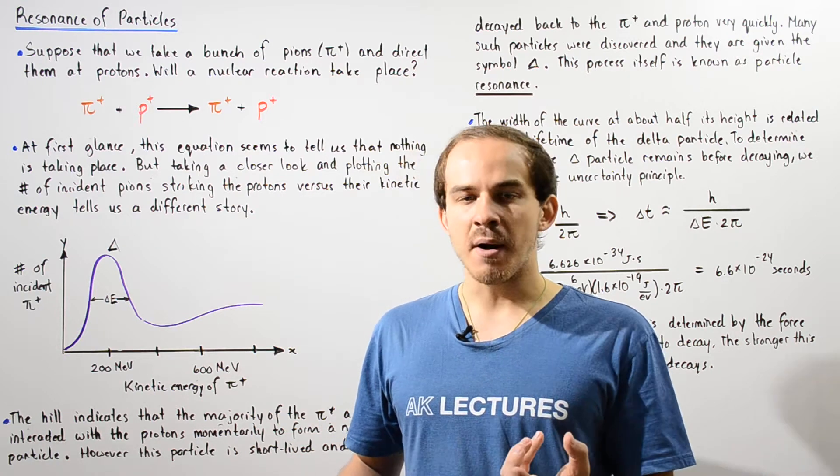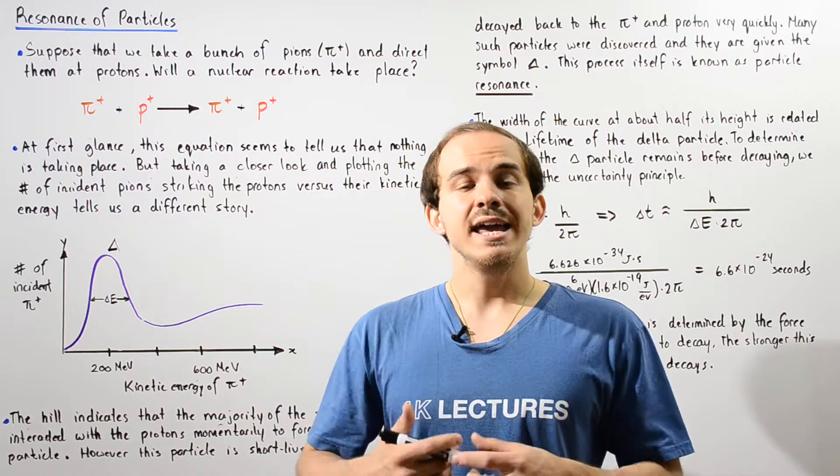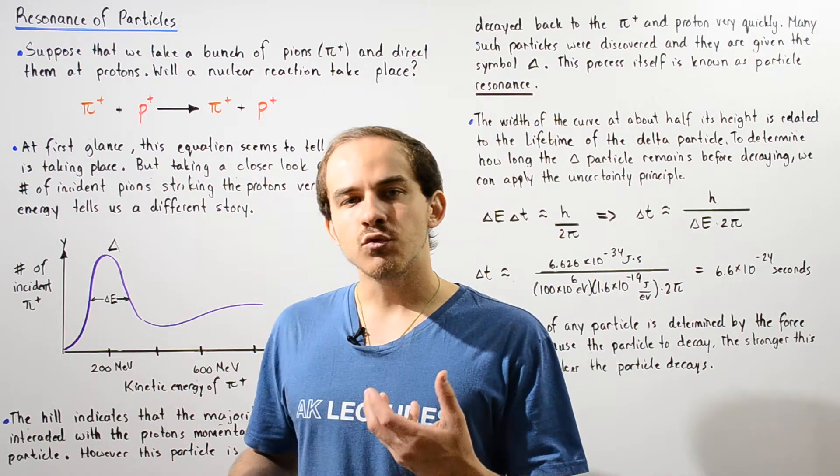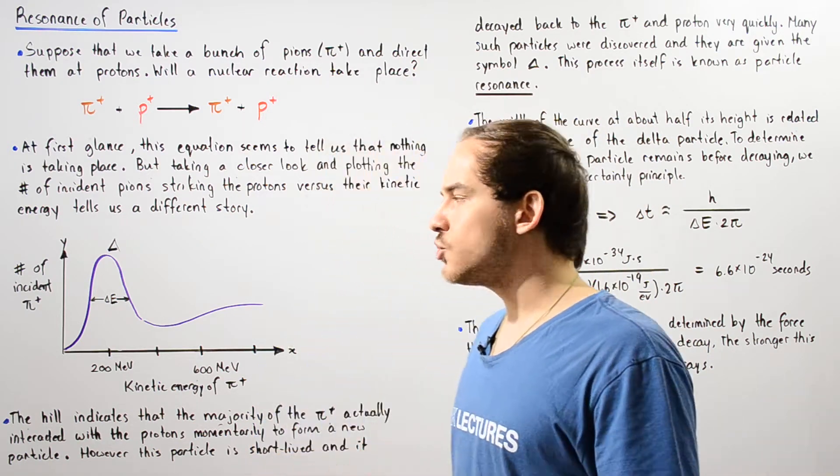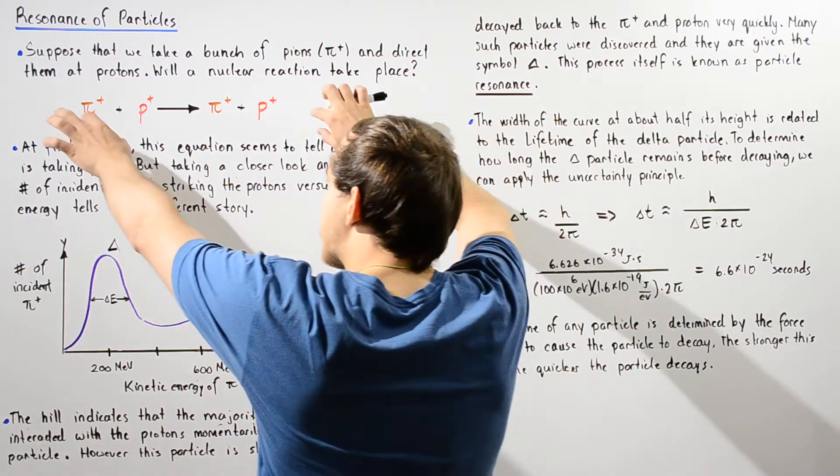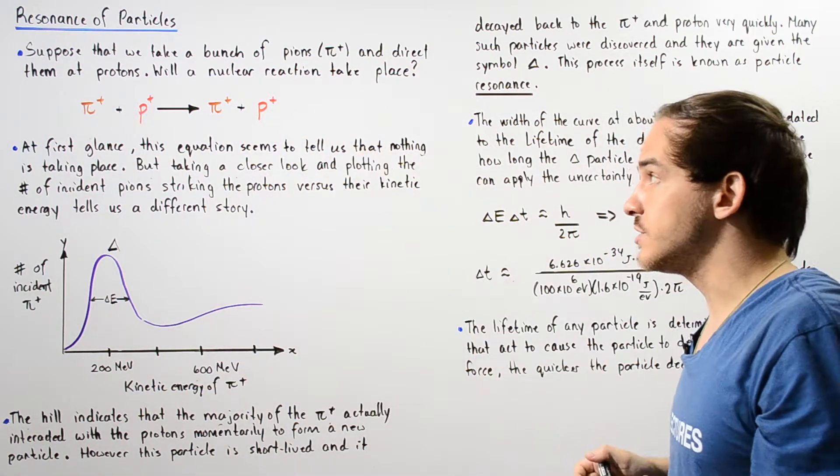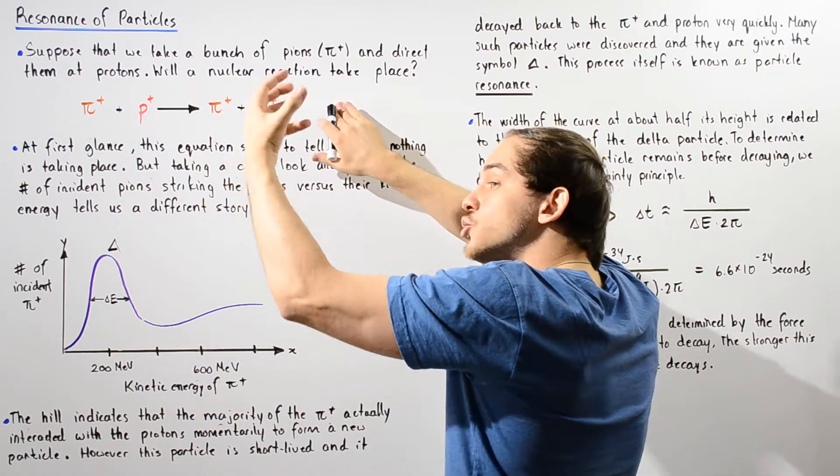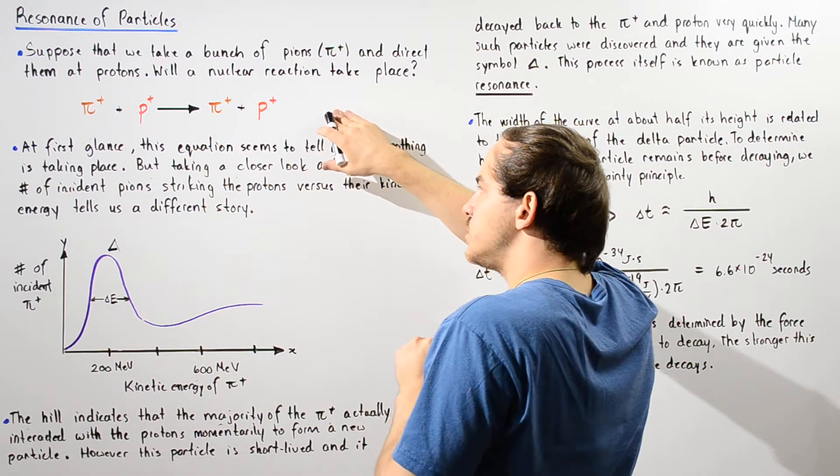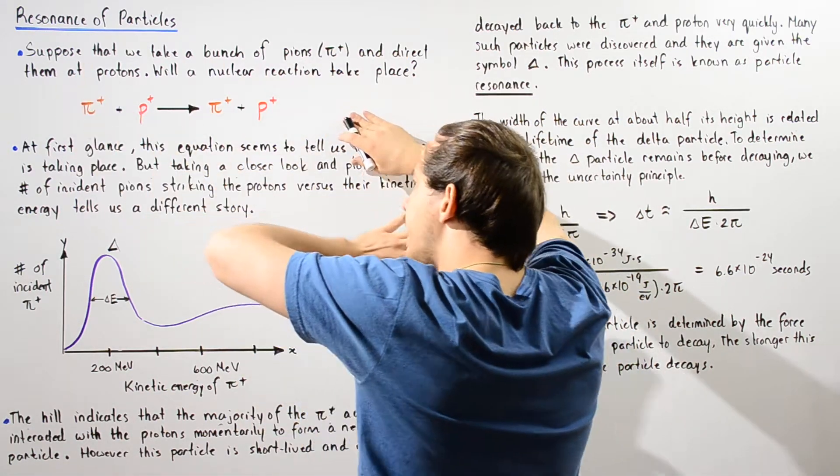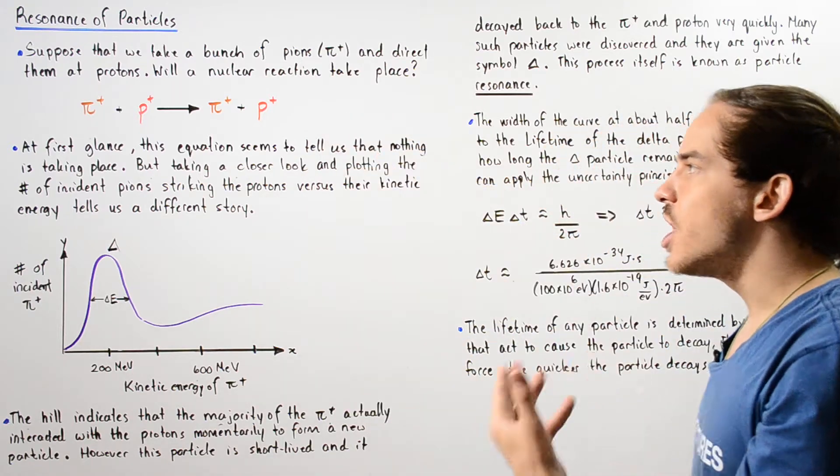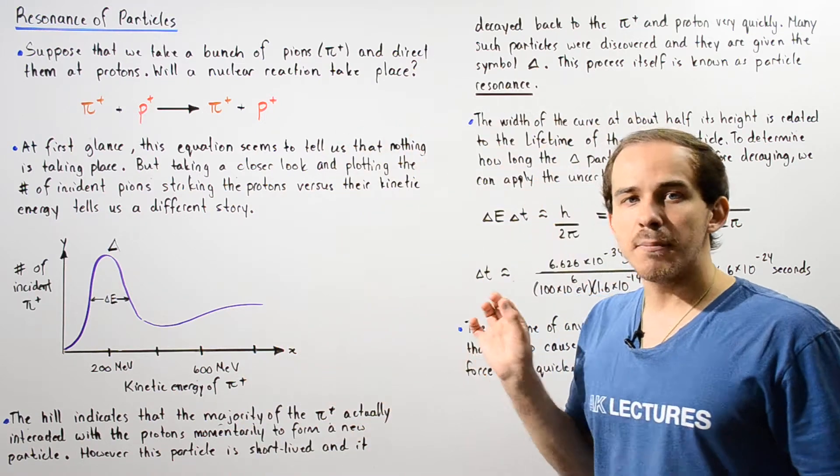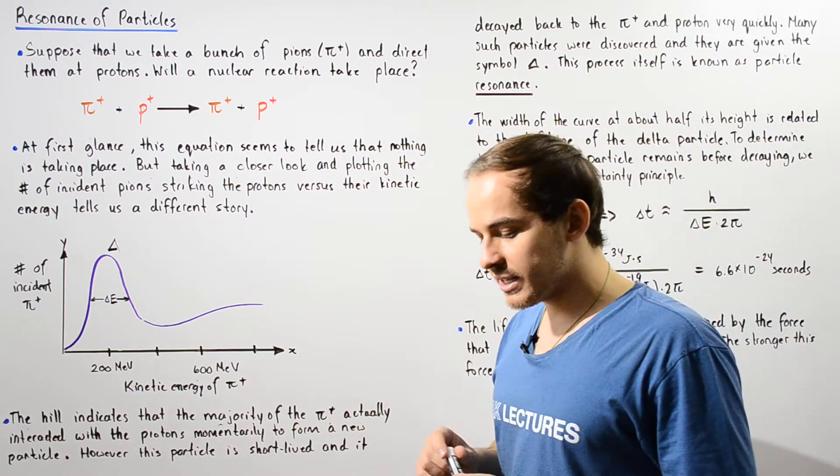How exactly will the pion and the proton interact with one another? This is the question that the Italian physicist Enrico Fermi tried to answer. Basically, if we examine the equation that describes this interaction, we see that the pion interacts with the proton to produce back the pion and the proton. So at least according to this equation, it seems as if nothing takes place. No interaction actually takes place between the proton and the pion. But this is not actually the case.